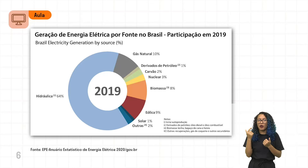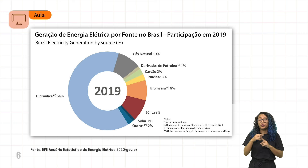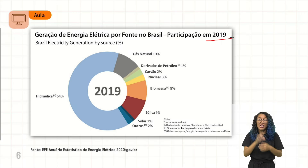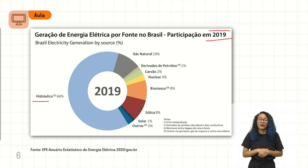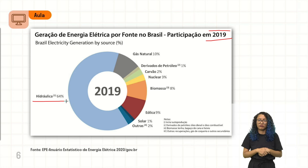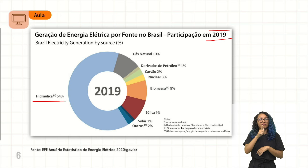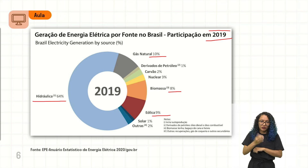We have a graph for you to observe. In this graph, we have energy generation per fonte in Brazil. Remember the participation of each of these sources in the year 2019. As you can see, the most part of our graph shows the presence of hydroelectric energy in Brazil, with a participation of approximately 64%. Then we have other sources: natural gas with 10%, eólica with 9%, and biomass with 8%, which were the most used sources.